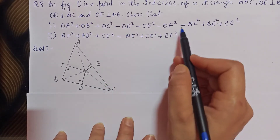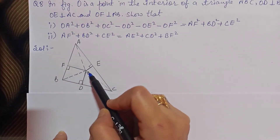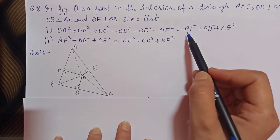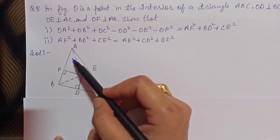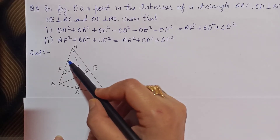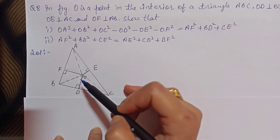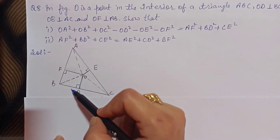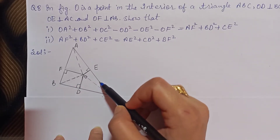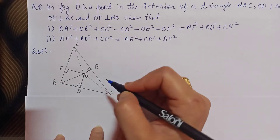اب آپ نے کیا کرنا ہے، جو proof کرنا ہے اس کے لیے ہمیں OA², OB², OC² چاہییں، تو ہم join کریں گے OA، OB اور OC کو۔ دوسری سائیڈ میں ہمارے پاس AF² ہے جو right triangle OAF میں ہے۔ BD² والا triangle OBD میں ہے، اور CE² والا triangle OCE میں ہے۔ تو ہم یہ تین triangles استعمال کریں گے۔